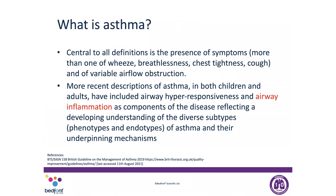Before we think about where FeNO testing fits in diagnostics, we have to think about what asthma is, because the basis of asthma descends in the right direction for tests. This is the British Thoracic Society guideline definition of asthma — the presence of symptoms: wheeze, breathlessness, chest tightness and cough, and variable obstruction. More recently we've had additions to the definition that include airway inflammation as a component of the disease, which is really important when we think about FeNO testing. We also get information around phenotypes and endotypes — the different sorts of asthma — but it still comes back to the inflammation underpinning exactly what's going on.